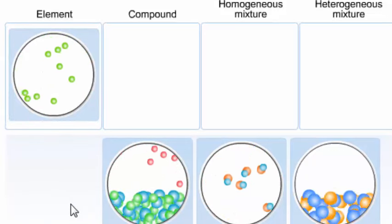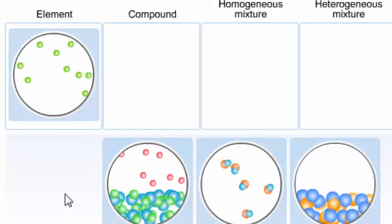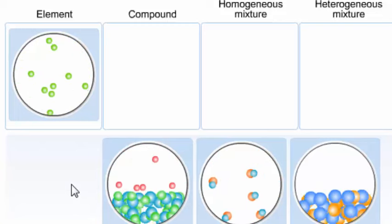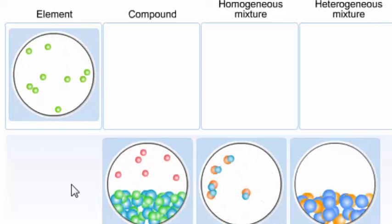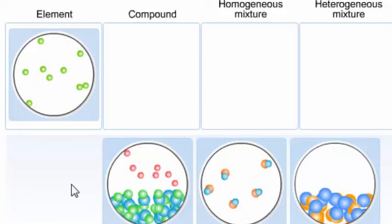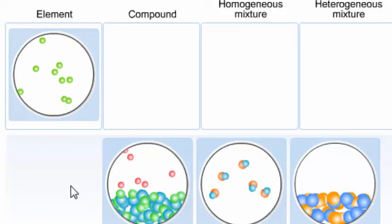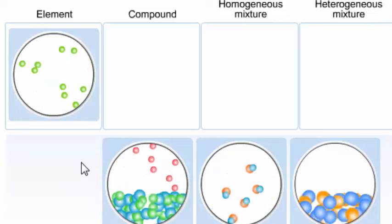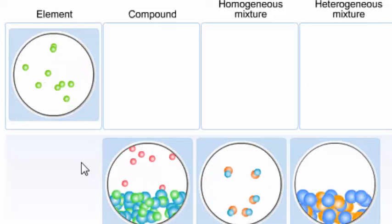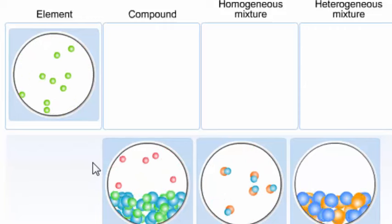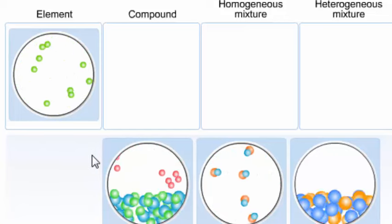The next one is a mixture. It is composed of an element, indicated by the red dots, and a compound, indicated by the two green dots connected to the one blue dot. This mixture is heterogeneous, because the distribution of the pure substances, in this case the element and the compound, the distribution of those pure substances is not uniform throughout the sample volume.